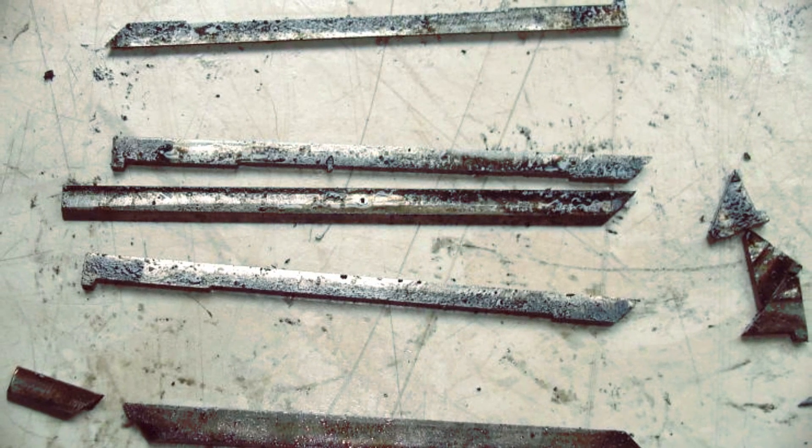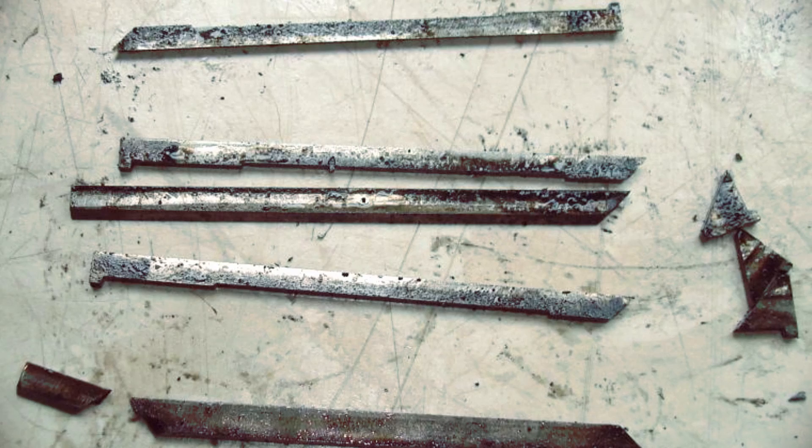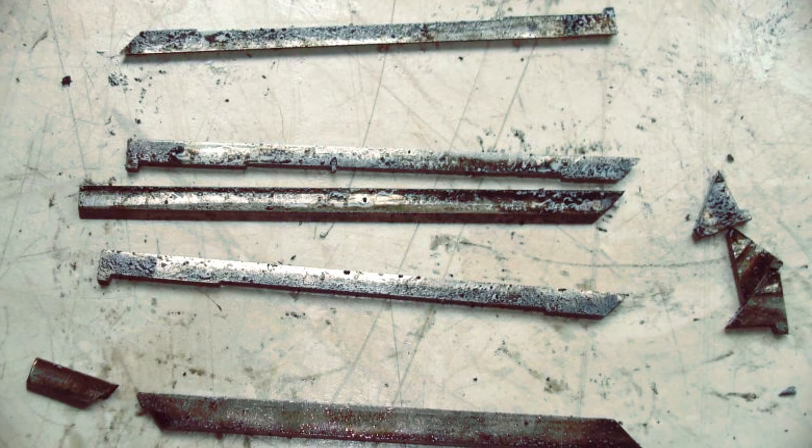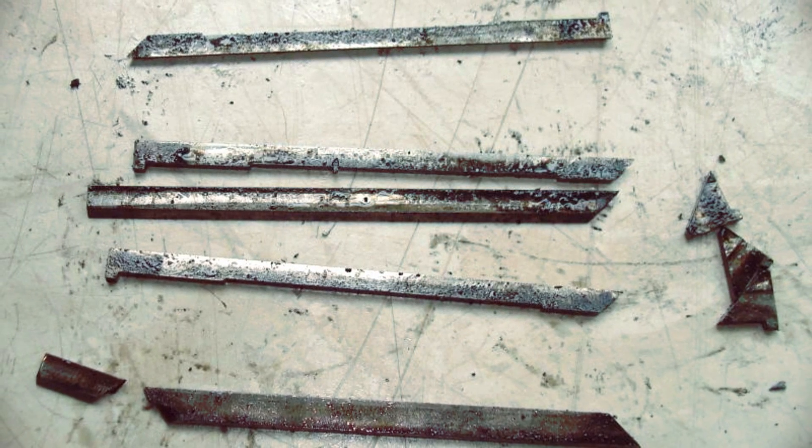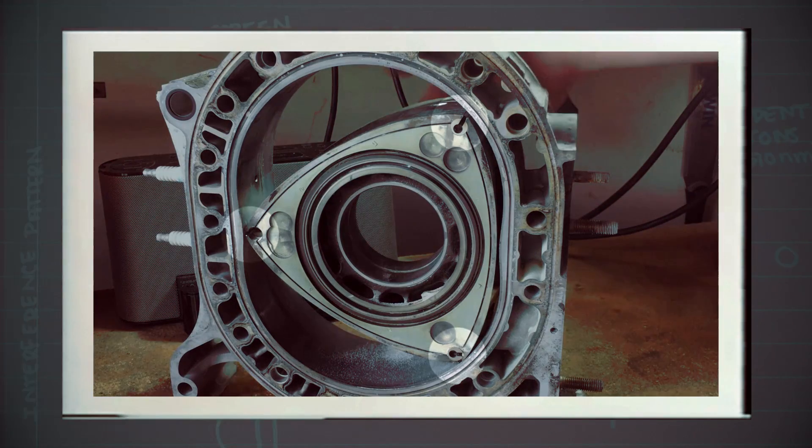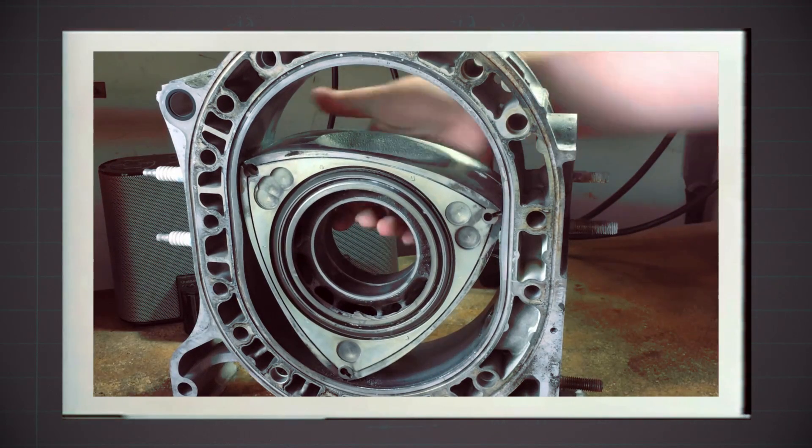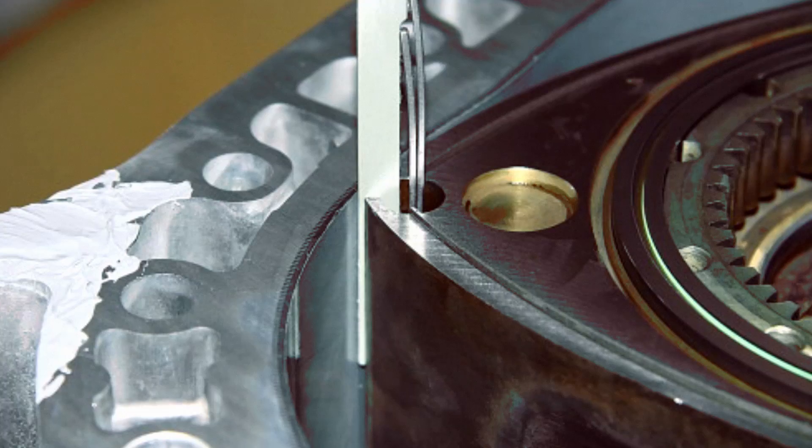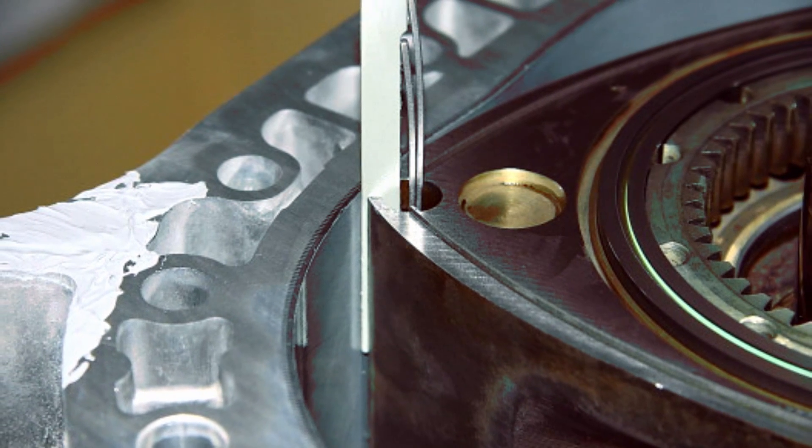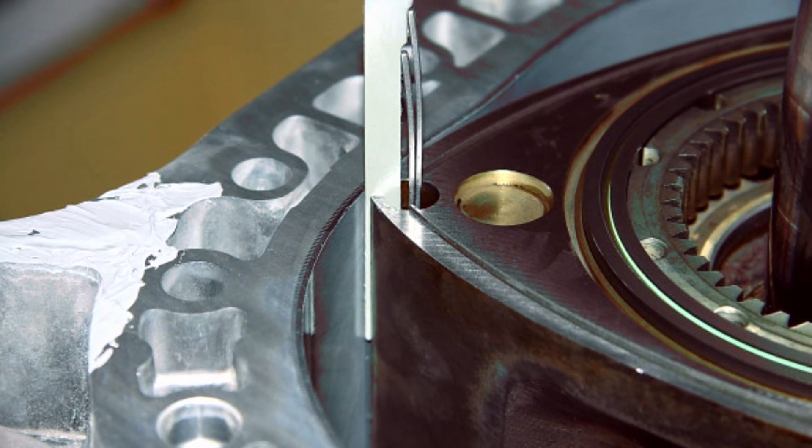Before we proceed, let's understand what apex seals are. In order to keep compression in the chamber, the three tips of the rotor must form airtight seals against the inner walls of the rotor housing. This is accomplished by seals at the three apexes of the triangle, known as apex seals.